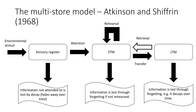The arrows coming down give a bit of extra information. In terms of the sensory register, if information is not attended to, it is lost by decay — it fades away over time. With short-term memory, information is lost through forgetting if it is not rehearsed. For long-term memory, information is also lost through forgetting — it just decays over time.